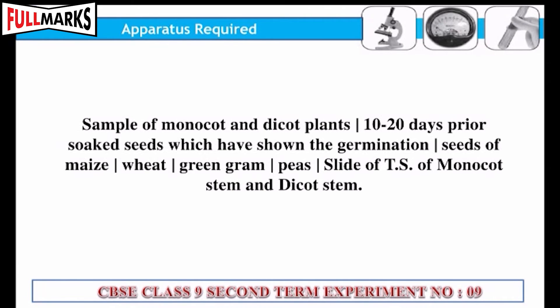Apparatus required: samples of monocot and dicot plants, 10-20 days prior soaked seeds — green gram and peas — and slides of transverse sections of monocot stem and dicot stem.